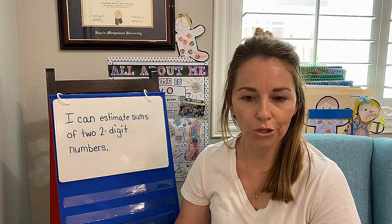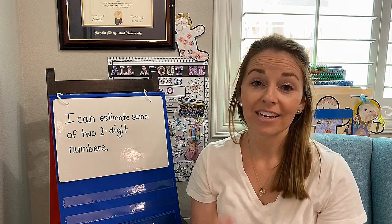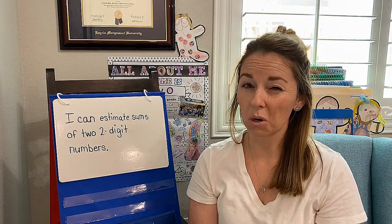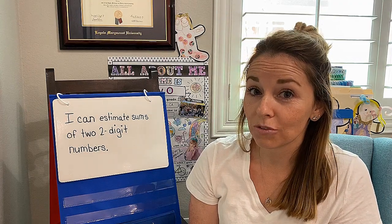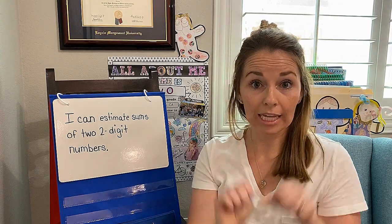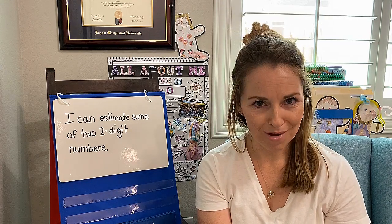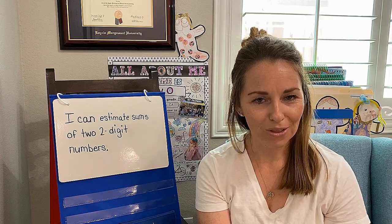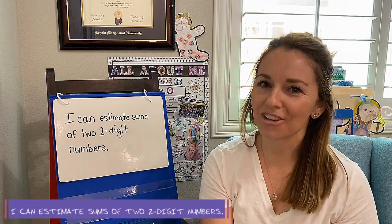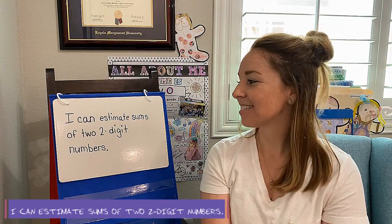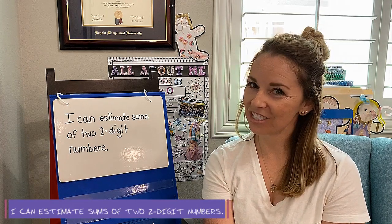Zero through four, you hit the floor. Five through nine, you climb the vine. Zero through four, hitting the floor, means that we round down to the nearest ten. Five through nine, climbing the vine, means we're going to round up to the next ten. You might remember that chant from a long time ago. By the end of today, you will be able to confidently say: I can estimate sums of two two-digit numbers.